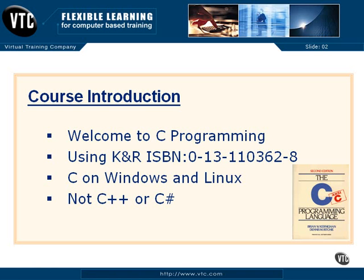We will be using the Kernighan and Ritchie — or Carnahan, I should say, the G is silent — Carnahan and Ritchie C Programming Language book that you see down there in the right corner of the screen. I gave you the ISBN number so that you can look up the book easily at your favorite online bookseller, or go to a brick-and-mortar bookstore and find Carnahan and Ritchie, more commonly known as K&R. We will use it as our guide.